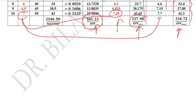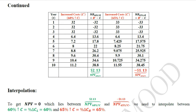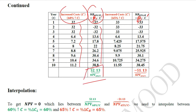Since NPV is still far from zero, we take a larger jump and experiment with a 60% increase in the cost, which gives us a new cost column. The net benefits are calculated using the new costs and old benefits. With this series of net benefits, the NPV is now close to zero — it is 2.13 currency units.